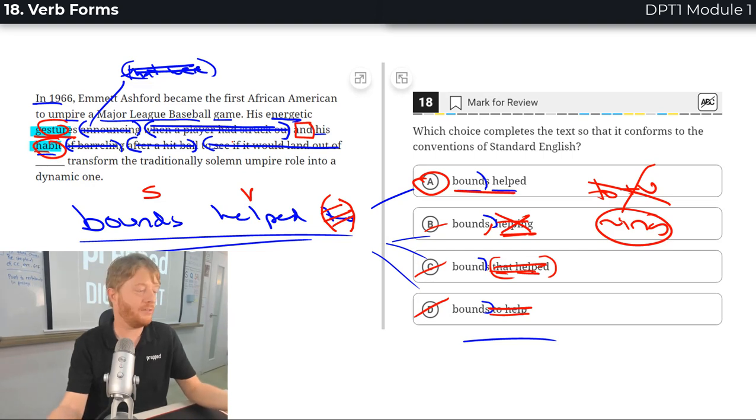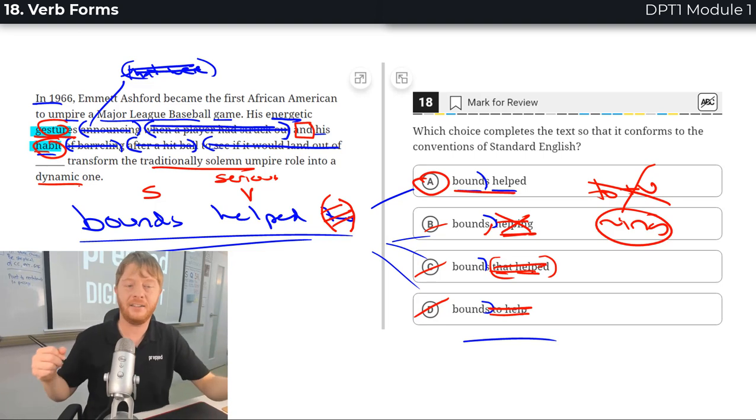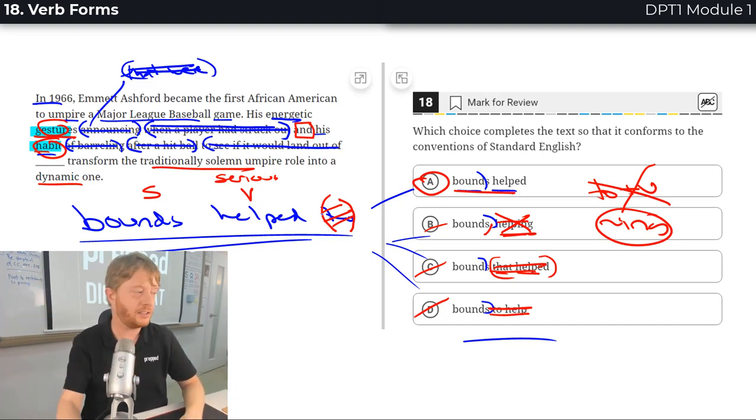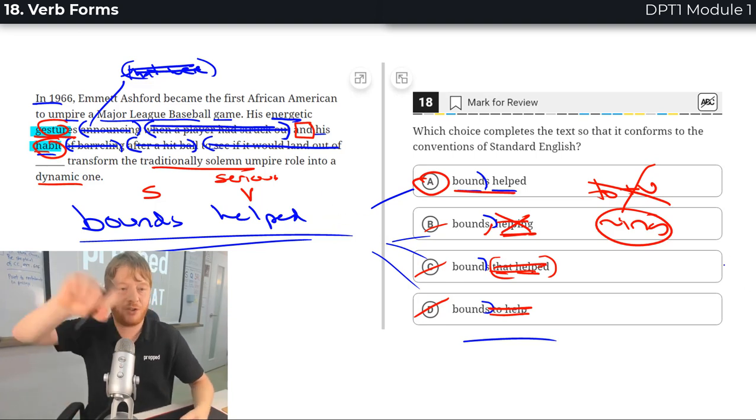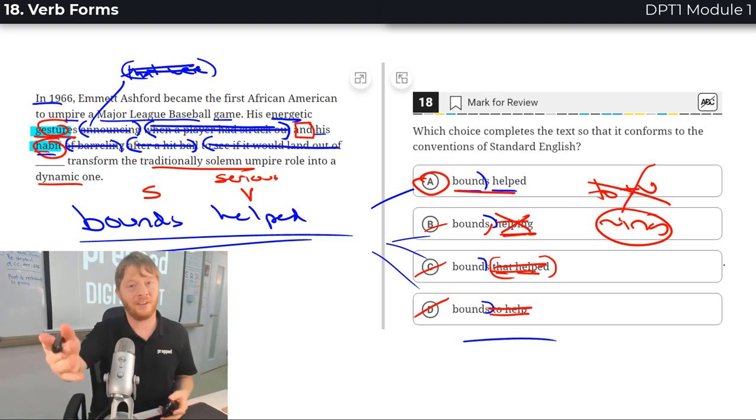I've made this explanation very long. Hopefully it's something you can make sense of. His gestures and his habit helped to transform the solemn traditionally solemn, the serious umpire role, into a dynamic, an active one. Great. Again, two is optional, but better to get rid of it, because in English, shorter is better. You don't want to water down your sentences with extra words that you don't need, especially small ones that add nothing like the word to. Final answer A.